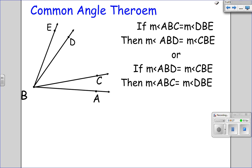Like when we talked about common segment theorem, common angle theorem follows the same principles. If I have two angles that are congruent and I add the same thing to both of them, then those two new angles will still be congruent. Likewise, if I have two larger angles that are congruent and I subtract the same piece from both of them, then the two smaller angles will still be congruent to each other.